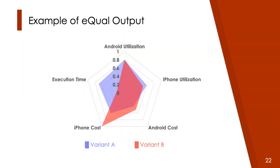eQual presents its solutions and findings in a chart like this. In this spider chart, you can lay down different variants and options that were found to be close to optimal and compare them to one another.